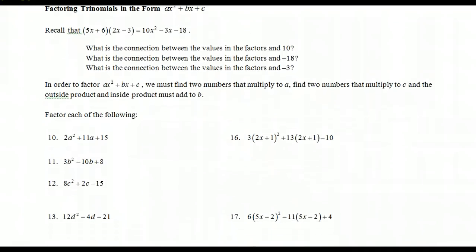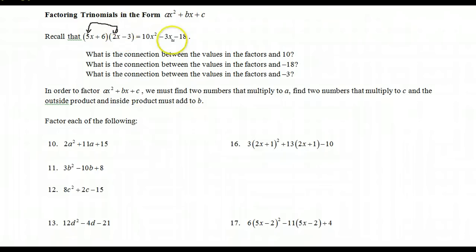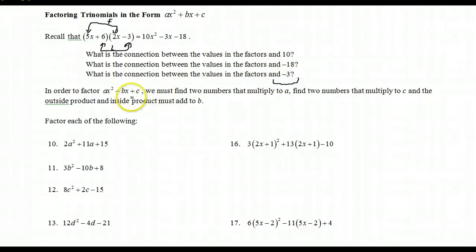Factoring trinomials in the form ax squared plus bx plus c. Multiplying out the binomials with FOIL gives 10x squared minus 15x plus 12x, so minus 15 plus 12 is minus 3x, and 6 times negative 3 is negative 18. The connection for the leading term is the product of the first terms in each binomial. The connection for the last term is the product of the last terms. And b comes from the combination of the outer and inner products adding together. To factor ax squared plus bx plus c, we must find two numbers that multiply to a, two numbers that multiply to c, and the outer and inner products must add to b.